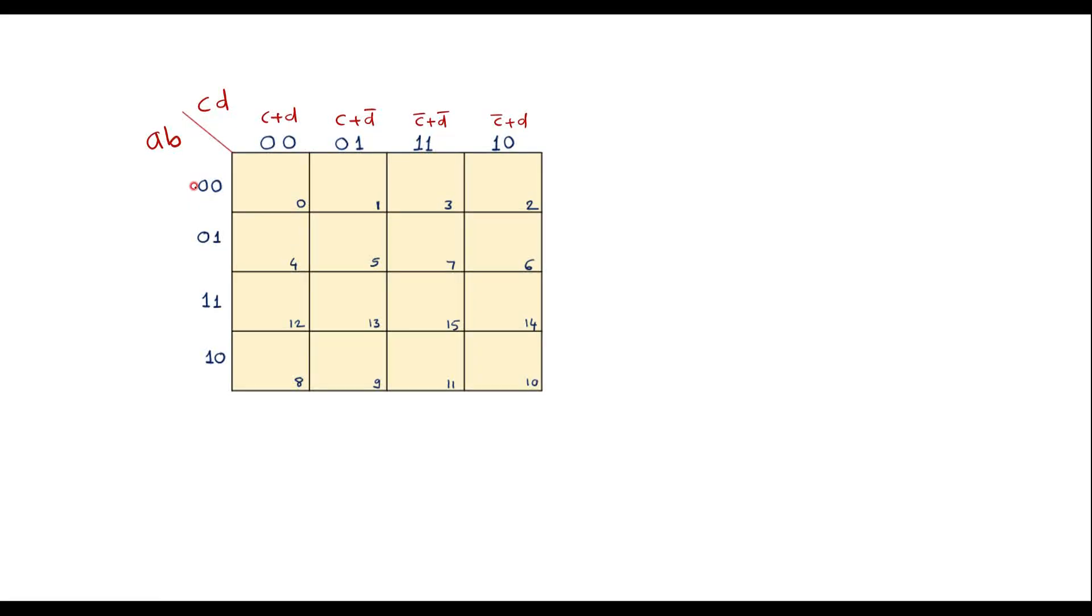Similarly here we have a plus b. 0, 0 is with respect to a plus b. 0, 1 is with respect to a plus b bar. This will be a bar plus b bar and this will be with respect to a bar plus b.